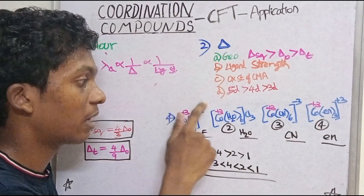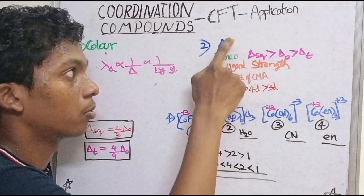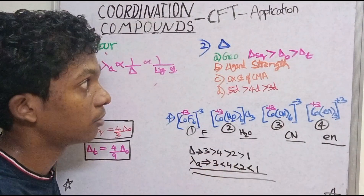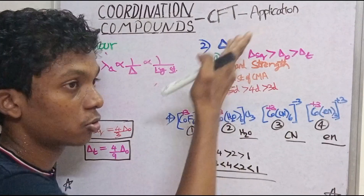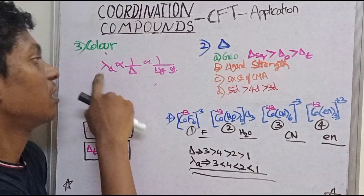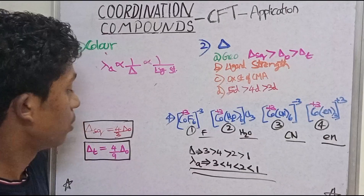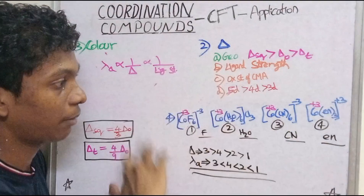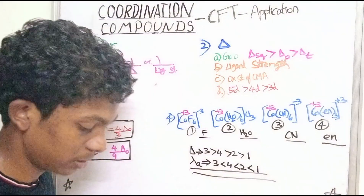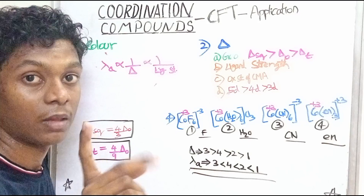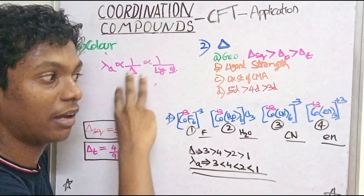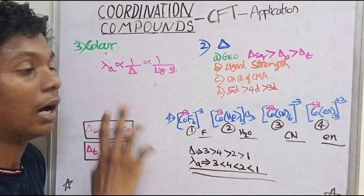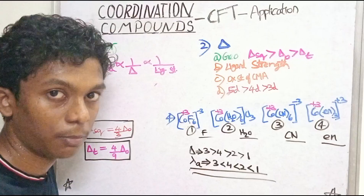Another factor affecting splitting energy is oxidation state. Higher oxidation state means greater splitting energy and thus shorter lambda-a absorbed. I hope you understood the order and concept. Practice these types of questions. The key is comparing ligand strength and oxidation state to determine the color of complexes. Thank you for watching, bye guys.